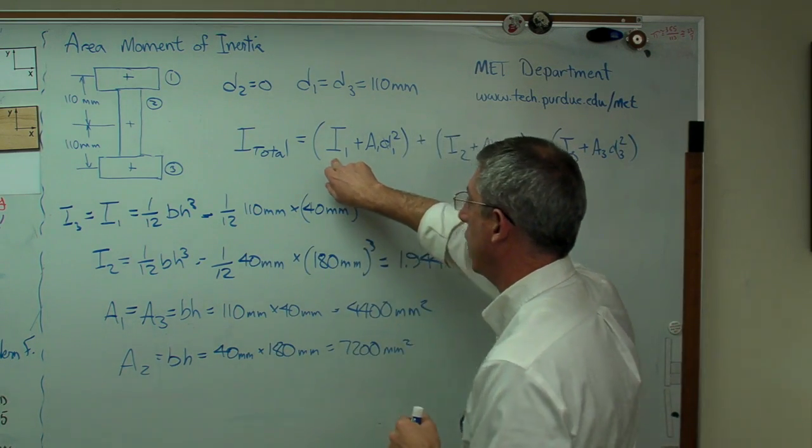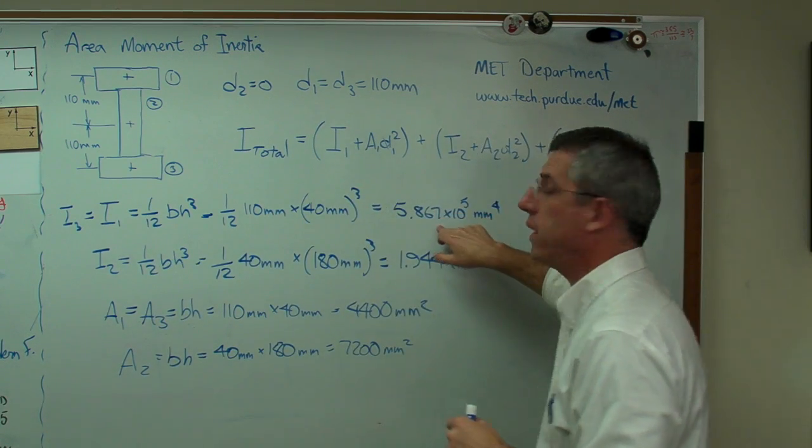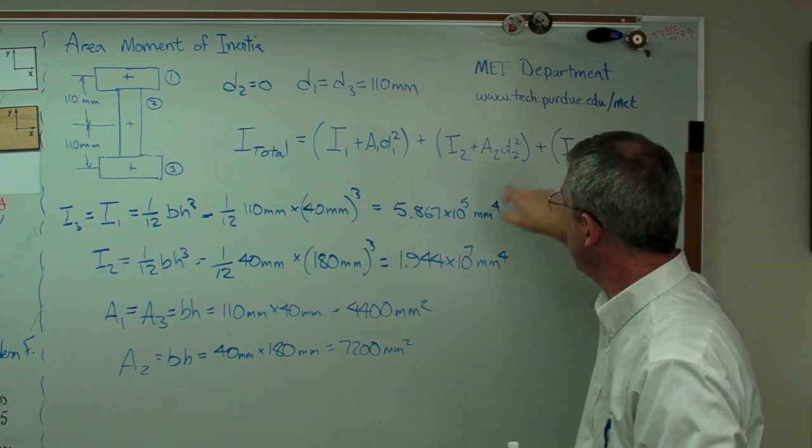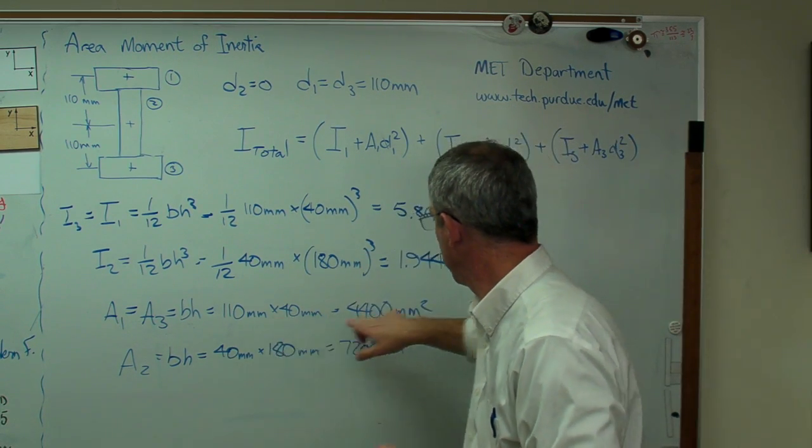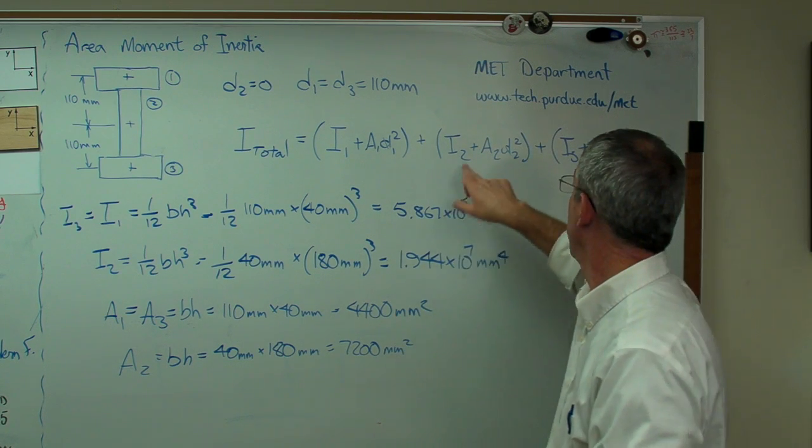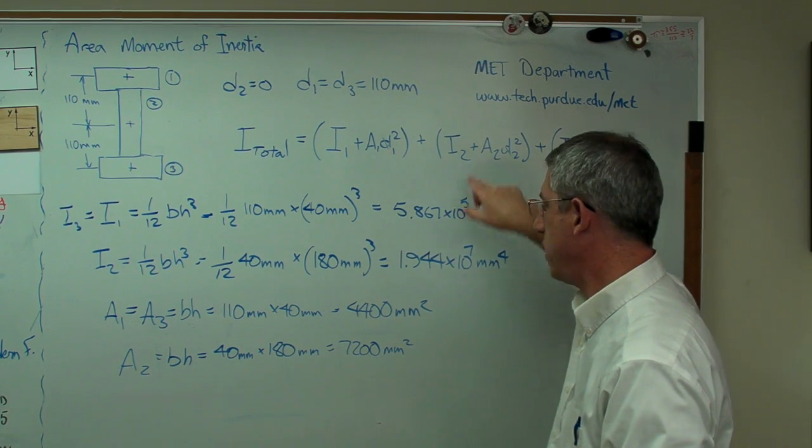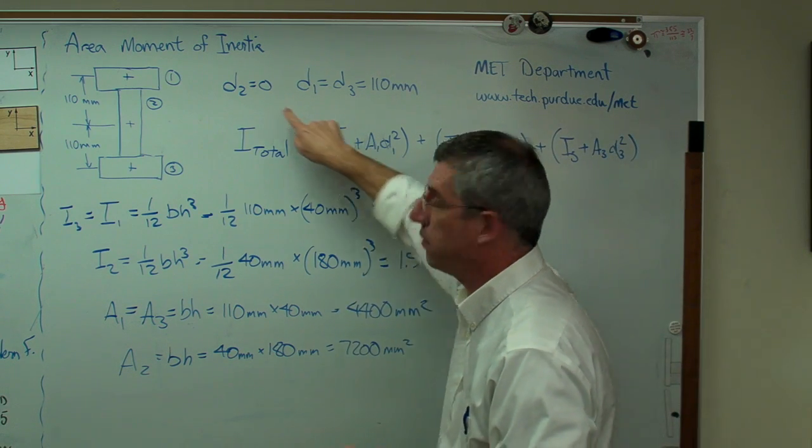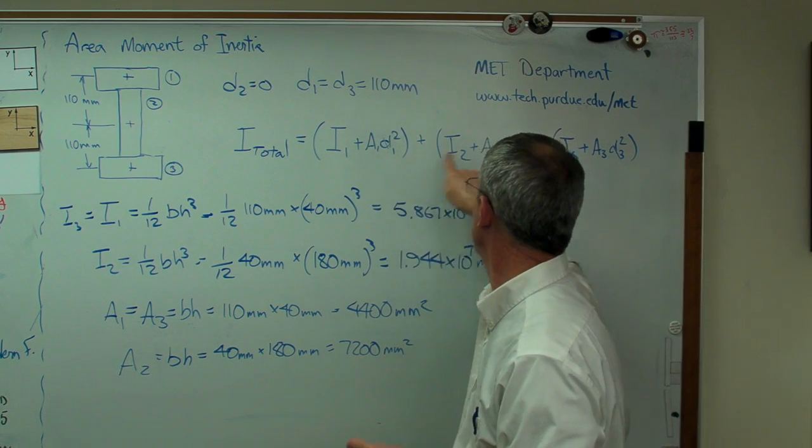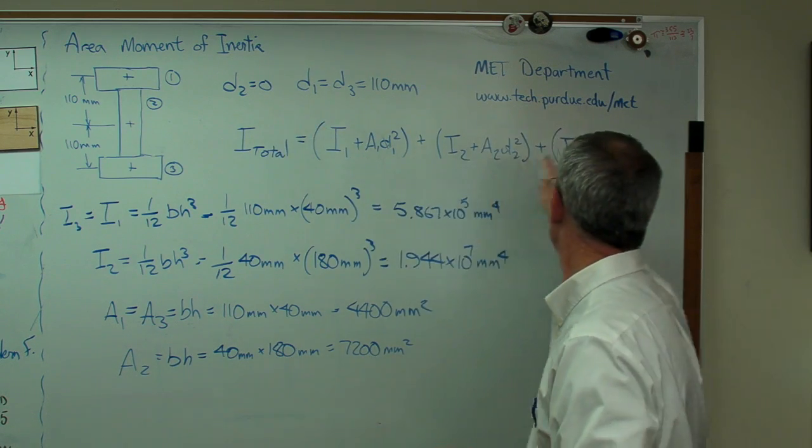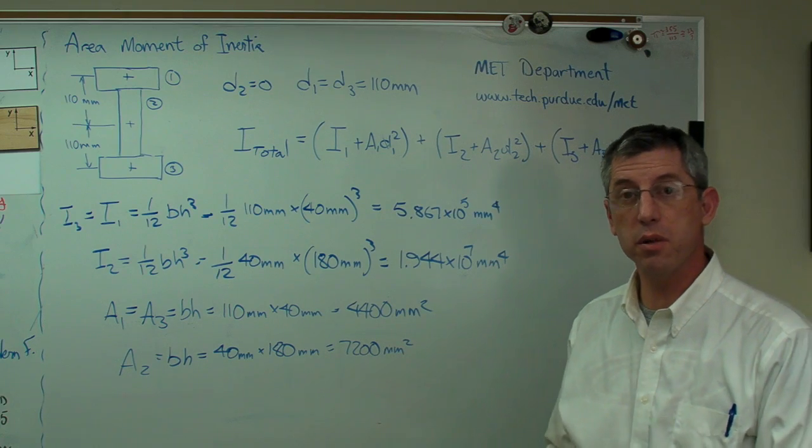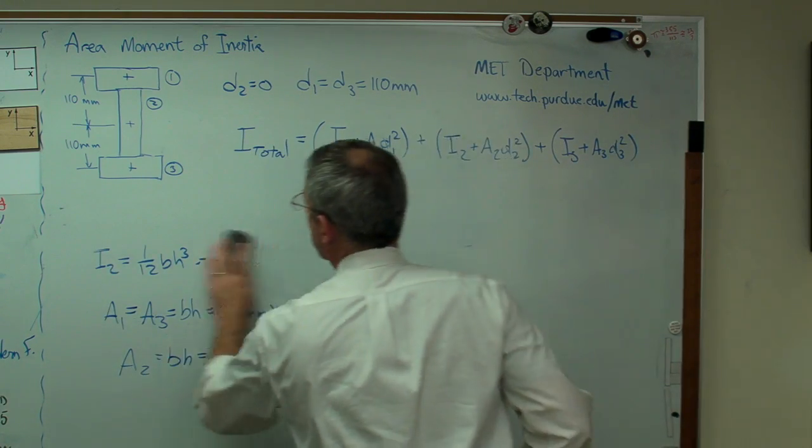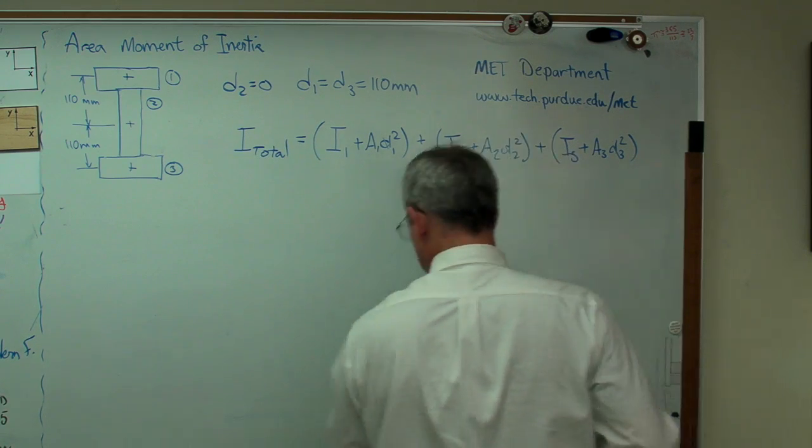I1 is equal the same as I3. I1 right there, I2 right there, I3 right there. A1 right there, A2 right there, A3 right there. D1, 110 millimeters. D2, zero right there. D3, 110 millimeters. We've got all the pieces put together now. So all you've got to do is plug all those numbers into your calculator or your iPad or whatever it is you're using to do this calculation.